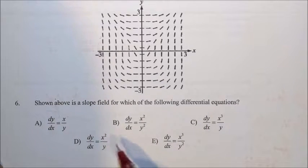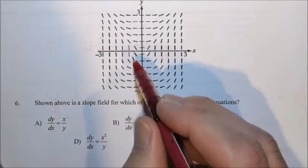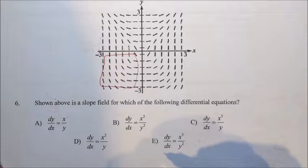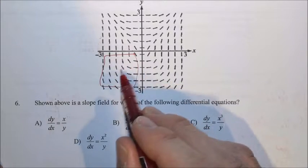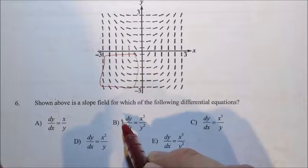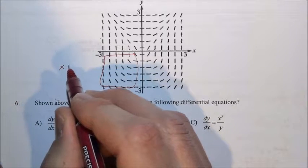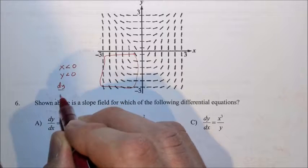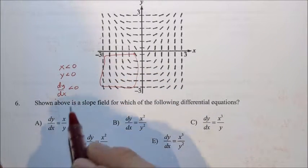Unfortunately, all five of our answers produce zero when x is zero. So what we have to look at here is the whole positive-negative situation. If we look at the negative, that's quadrant three when x and y are both negative.